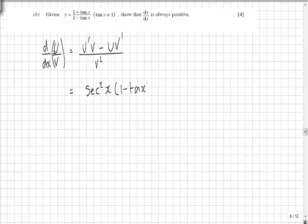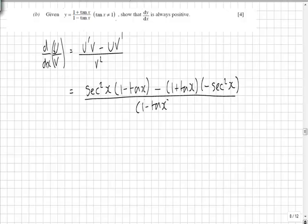minus tan x minus u is going to be 1 plus tan x multiplied by v dash which is minus sec squared x. Remembering that tan x differentiates to sec squared x over 1 minus tan x all squared.